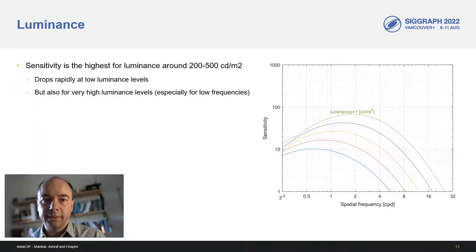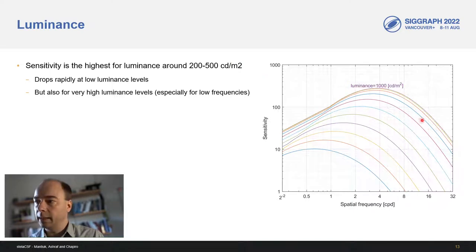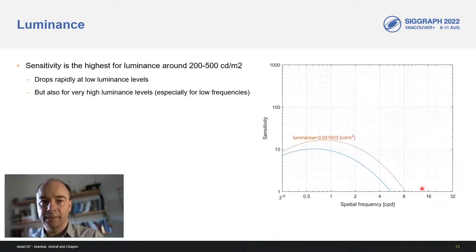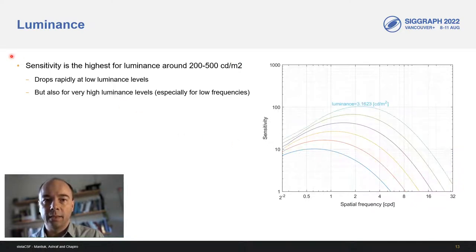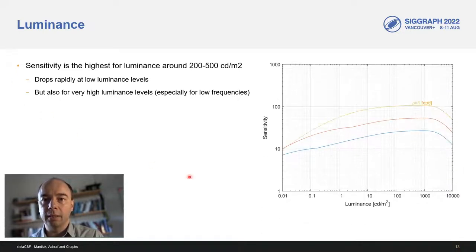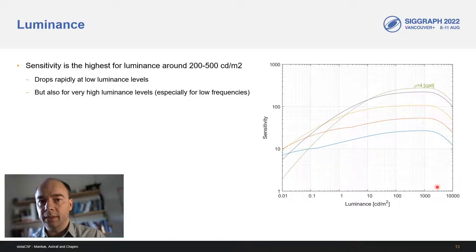Luminance has a very strong effect on sensitivity, especially at high luminance levels. The sensitivity is lower at low light levels, at which our vision is limited by both photon noise and neural noise of the visual system. But the sensitivity also drops at very high luminance levels. The exact cause of this is unknown.